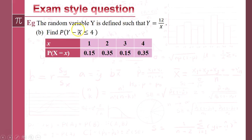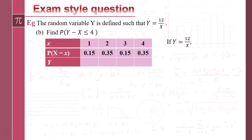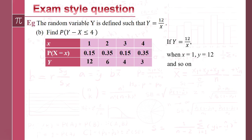Part B introduces Y, defined as Y equals 12 over X. So if X is 1, Y is 12; when X is 2, Y is 6; when X is 3, Y is 4; when X is 4, Y is 3. All it's doing is redefining the outcomes. The associated probabilities remain exactly the same — so the probability of Y equals 12 is 0.15, and the probability of Y equals 6 is 0.35.